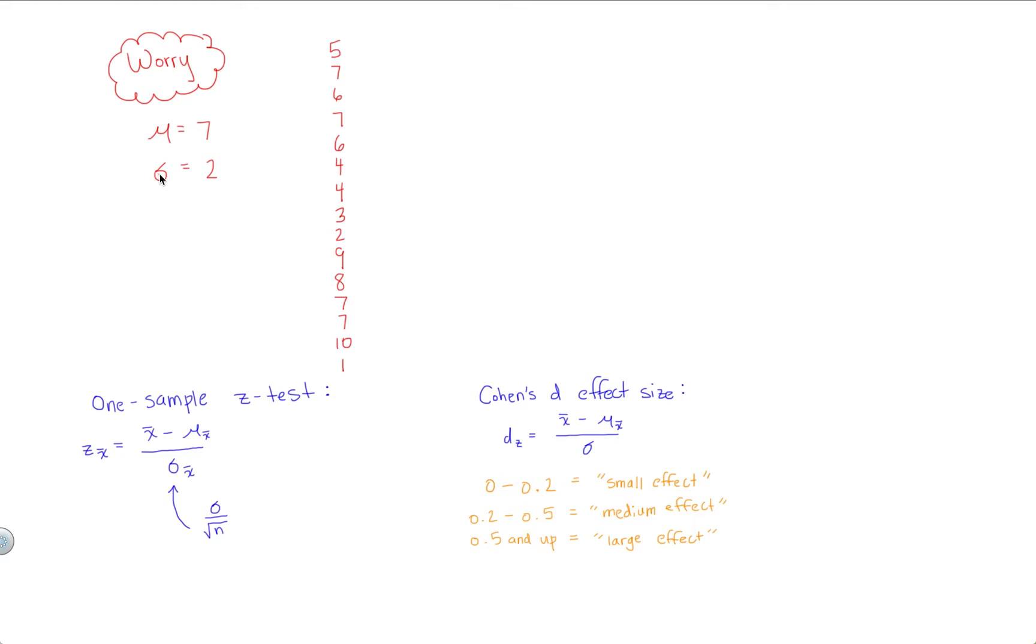mu, the population mean, and sigma, the population standard deviation. Let's say that worry in the population is, on average, a 7 out of 10. That's how much people worry. And the standard deviation in the population is 2. So you want to test whether five minutes of meditation can reduce this number.